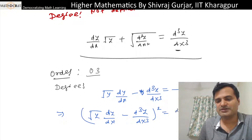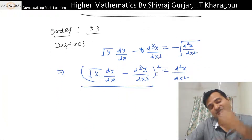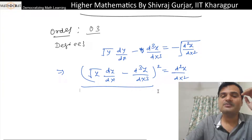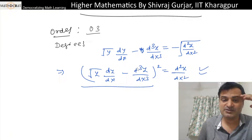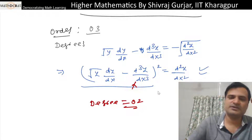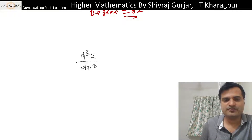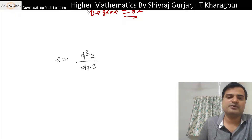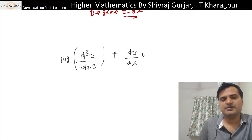To eliminate the radical, we rearrange and square both sides. After squaring, the derivatives are free from fractional or radical powers and fraction powers. Now we can put the equation in the form of a binomial polynomial. In this case, the highest order derivative's power gives the degree, which will be 2.